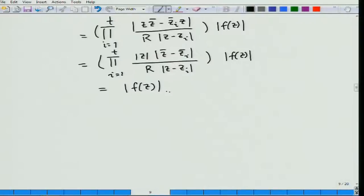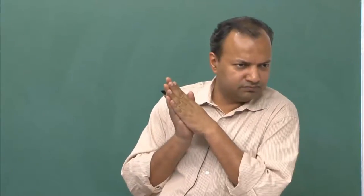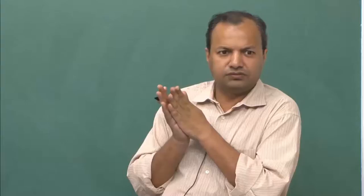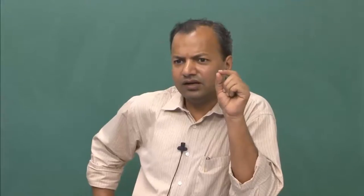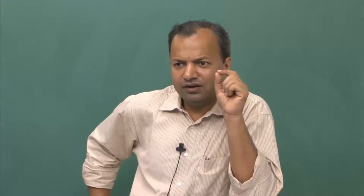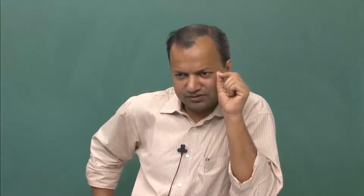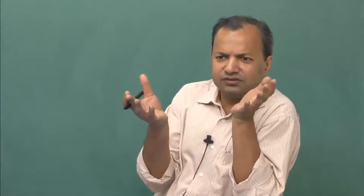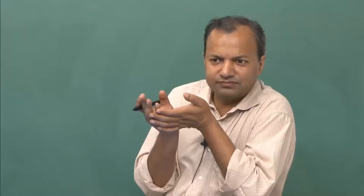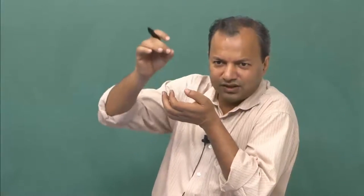For g, what we know is that g is an analytic function on the disk — there are no poles inside the disk. It has to have a finite number of zeros, because every zero is isolated for any analytic function — that is something we showed long ago. Therefore, inside any finite disk or finite region there can be only finitely many zeros.